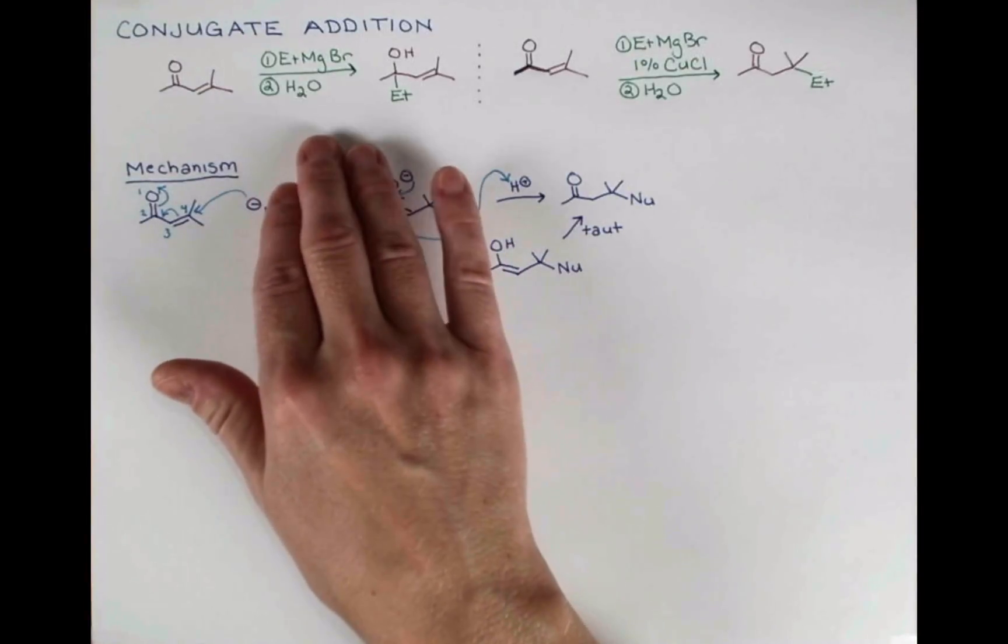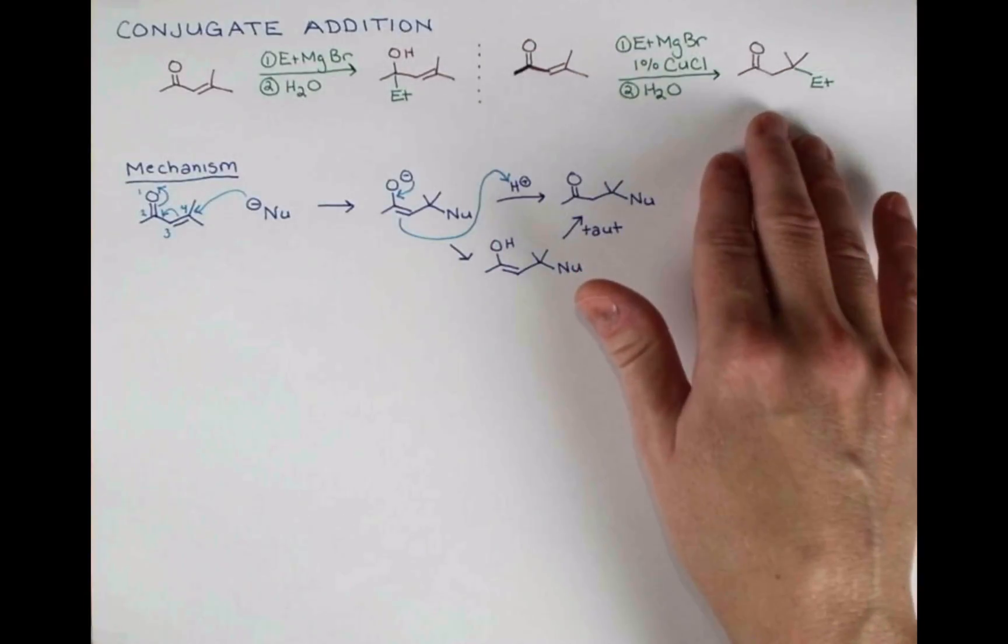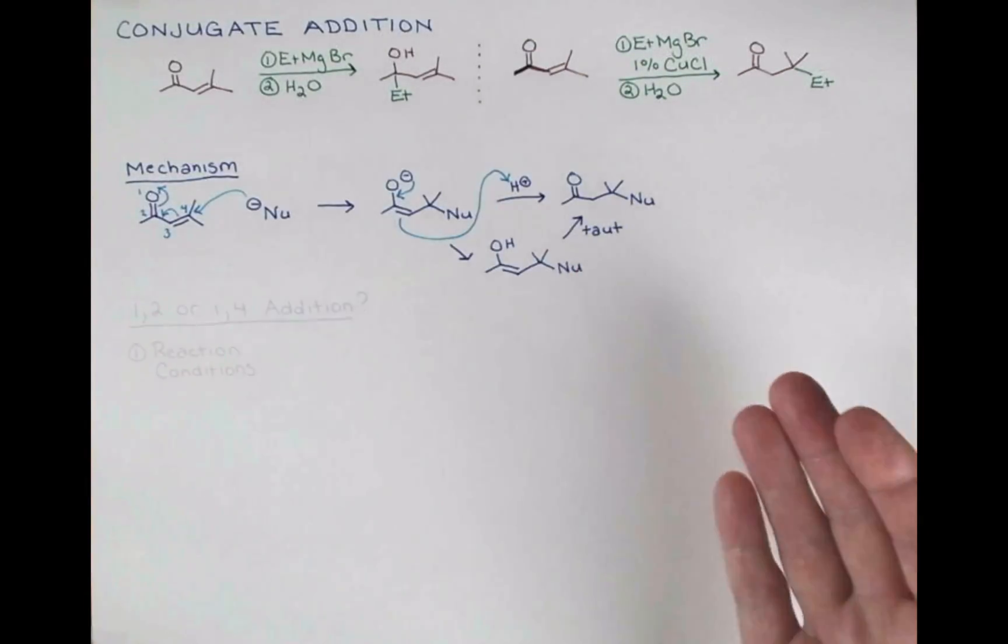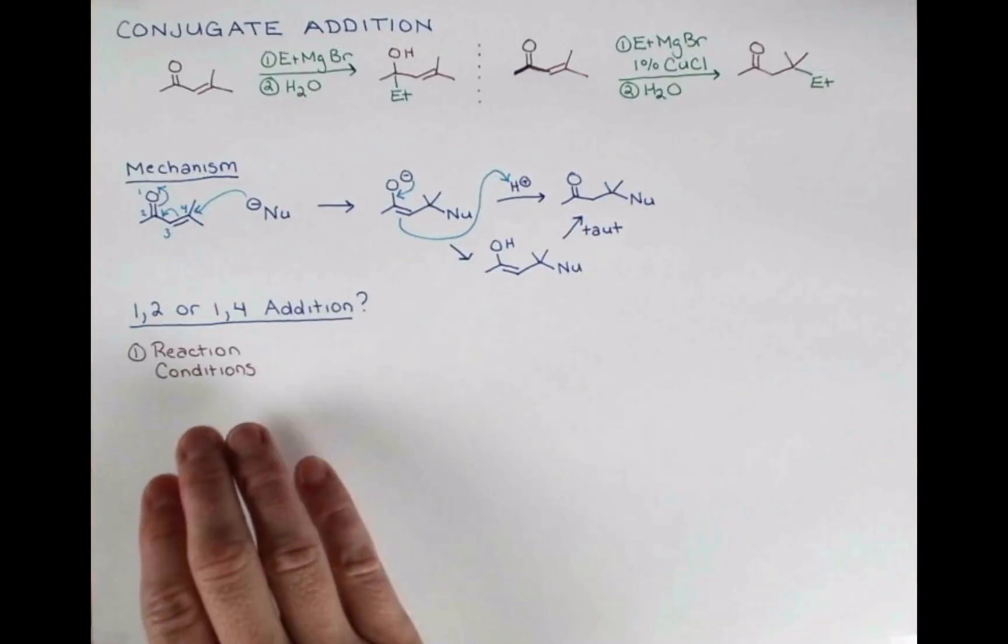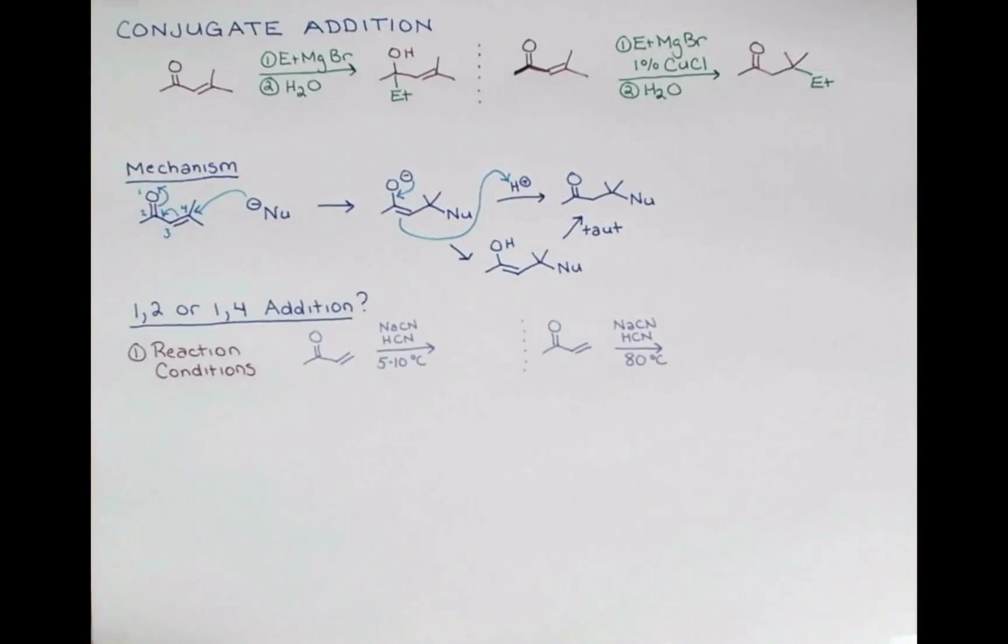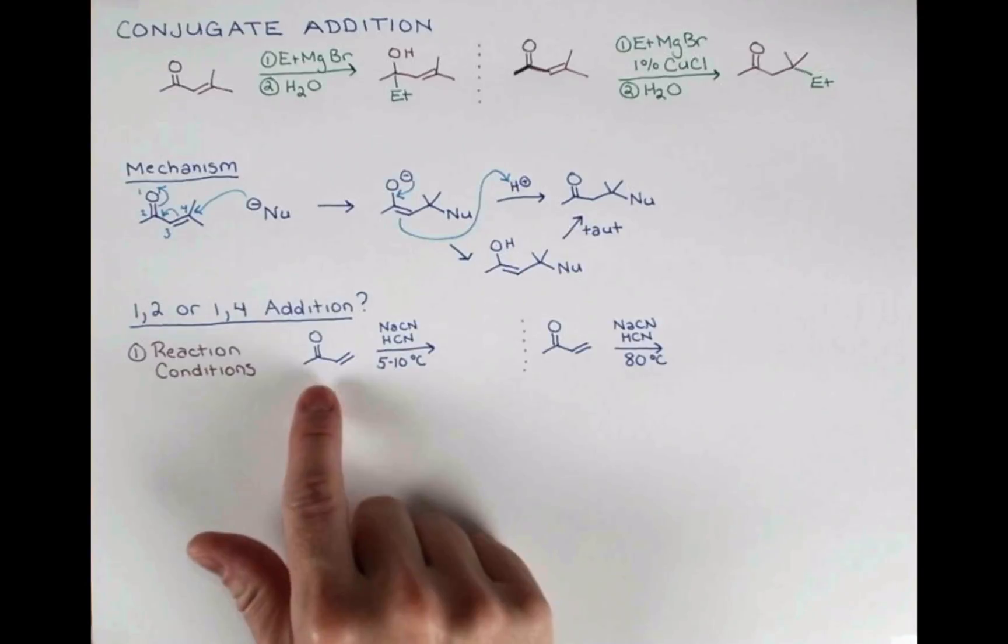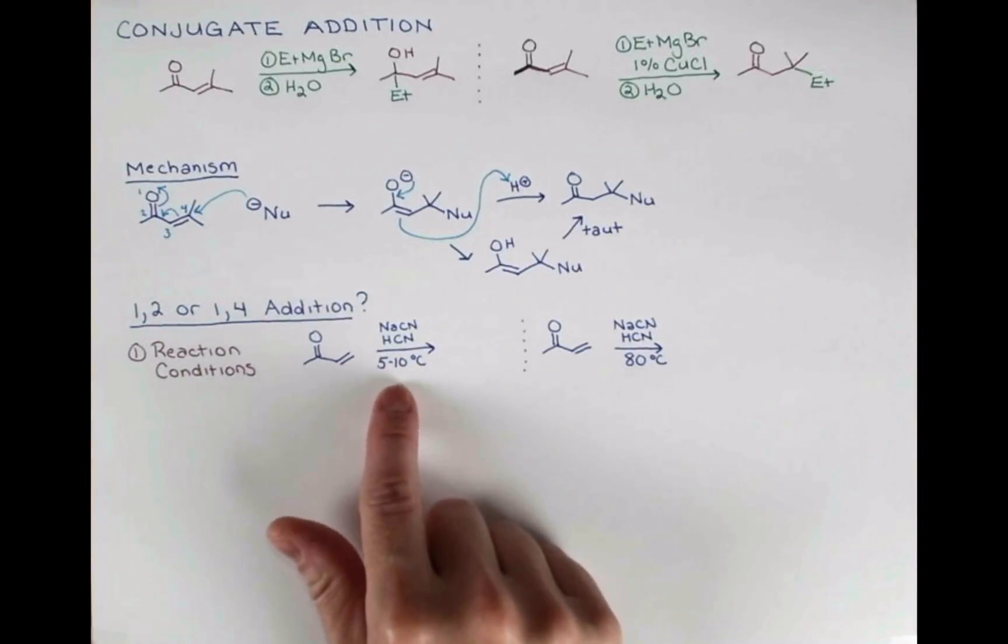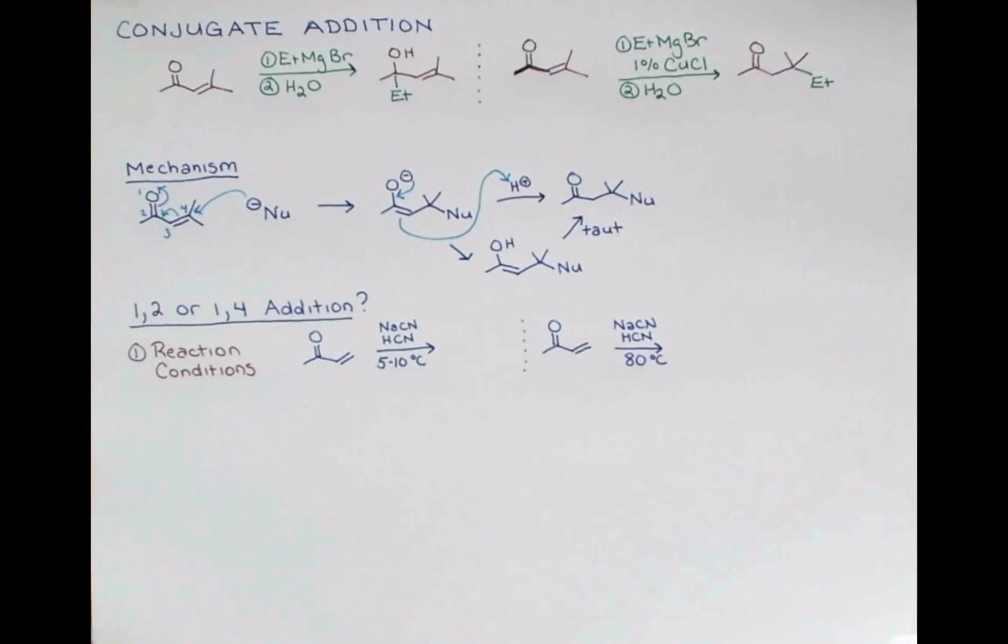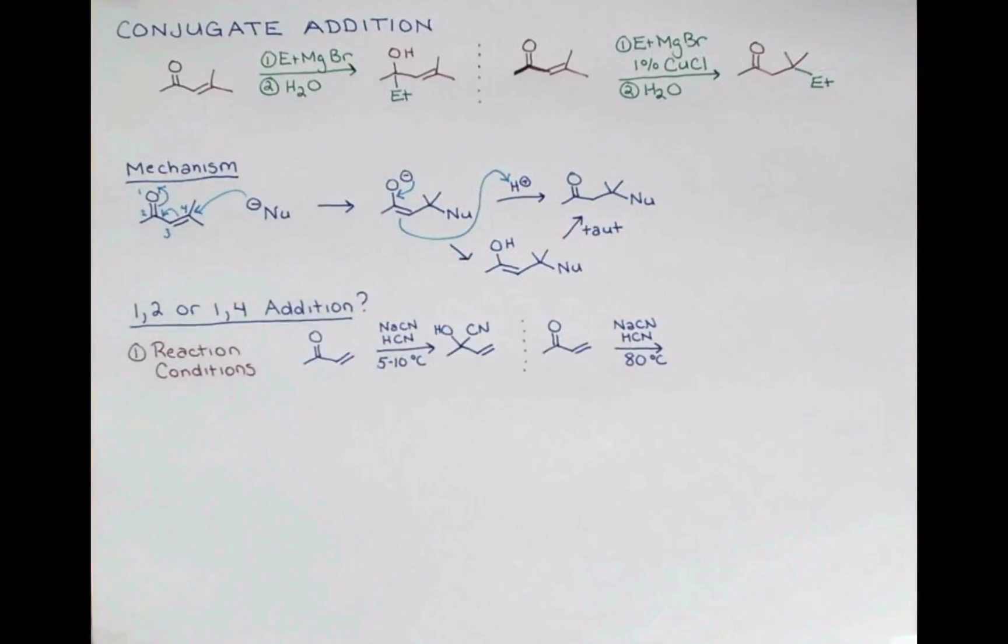Now to know whether a given reaction will produce a 1-2 addition product or a 1-4 addition product, we have to consider several factors. Reaction conditions can influence 1-2 versus 1-4 addition. When this reaction, the addition of the cyanide nucleophile to this enone here, is run at cool temperatures, we get the 1-2 addition product. This is called a cyanohydrin. However, when we heat this reaction, we get the 1-4 product.